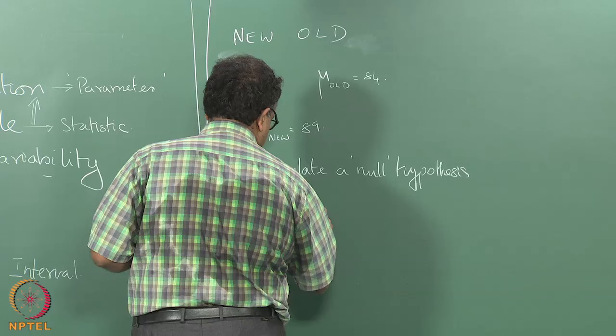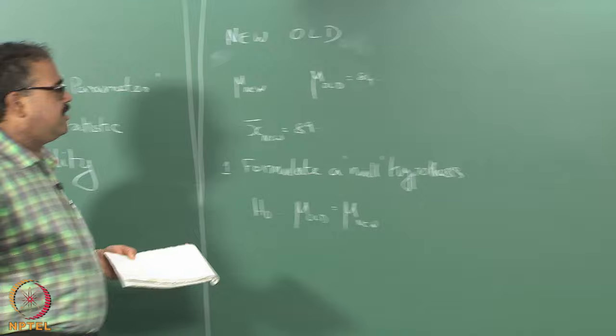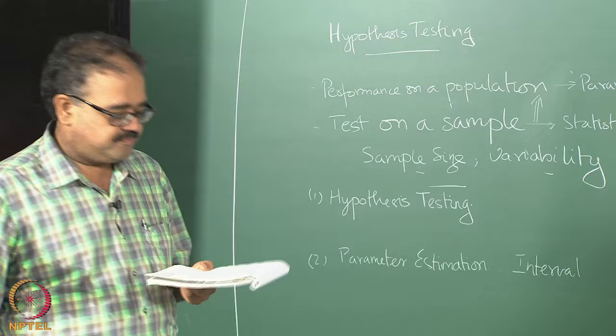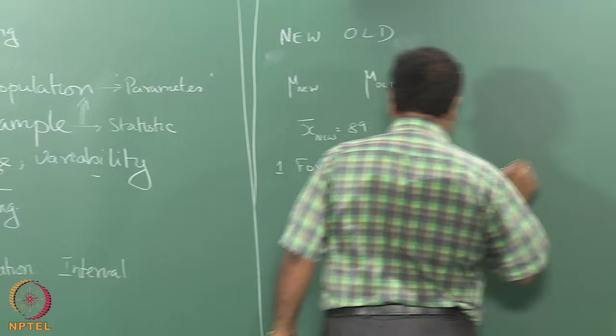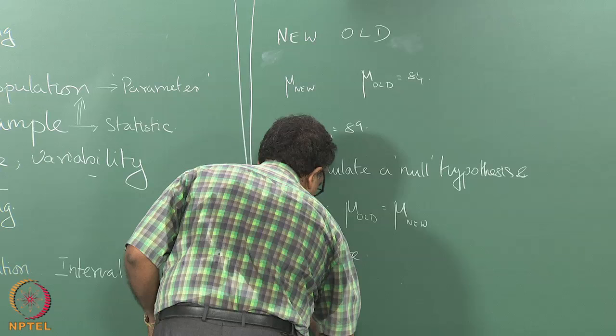I formulate a null hypothesis: mu_old equals mu_nu — that is, the two algorithms are equally good. Then I formulate an alternate hypothesis that the new algorithm is better.